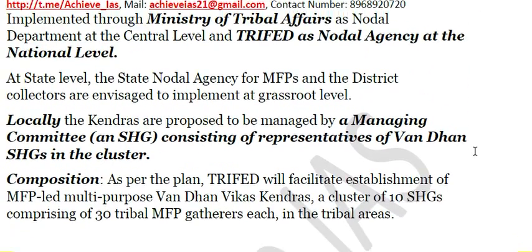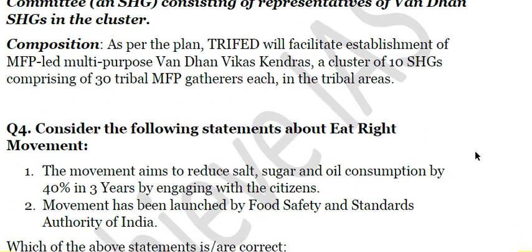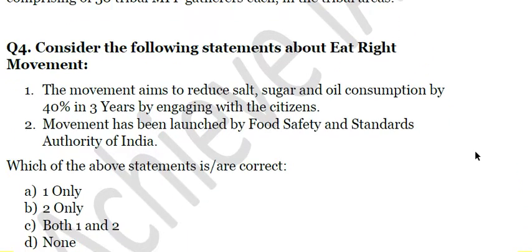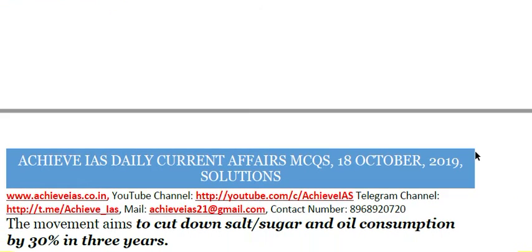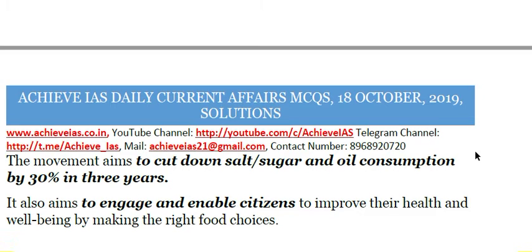Next question: Consider the following statements about the Eat Right Movement. First — the movement aims to reduce salt, sugar, and oil consumption by 40% in three years. Second — the movement has been launched by the Food Safety and Standards Authority of India (FSSAI). Only the second statement is correct. The first is incorrect because the movement aims to reduce salt, sugar, and oil consumption by 30%, not 40%, in three years. The Eat Right Movement was launched by FSSAI and also aims to engage and enable citizens to improve their health by making the right food choices.